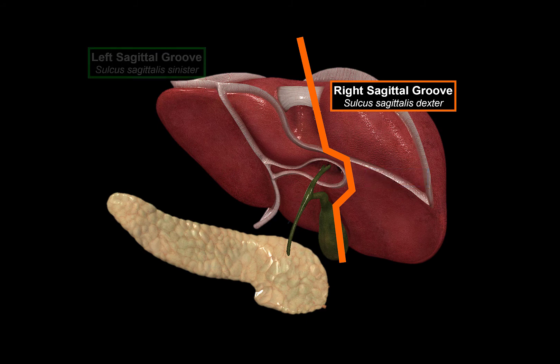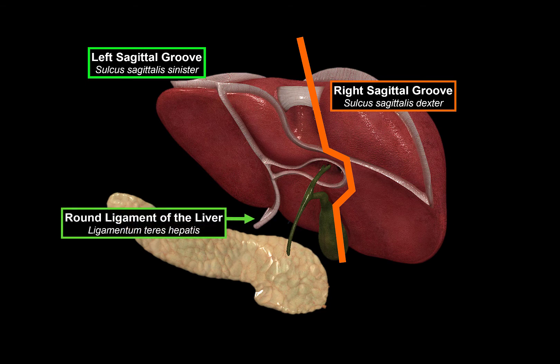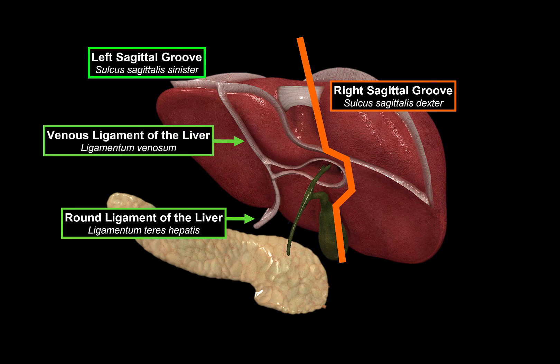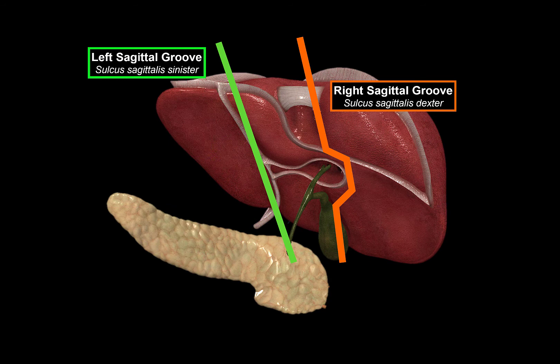Then we have the left sagittal groove. To understand this groove, we need to know the ligaments. Down here we have a ligament called the round ligament of the liver, or ligamentum teres hepatis in Latin. And above that, there's a ligament called the venous ligament of the liver, or ligamentum venosum. These two ligaments form the left sagittal groove, which separates the left lobe from the rest of the lobes.